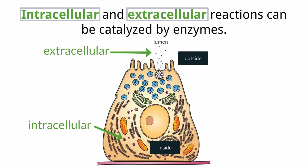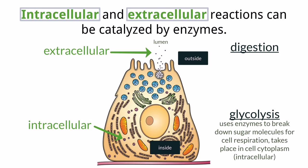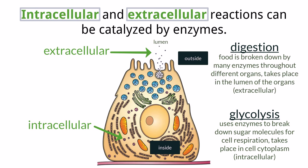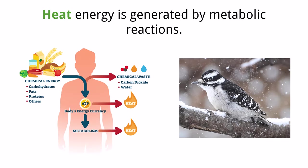Two examples you need to know as a difference between intracellular and extracellular enzymes are enzymes found within the processes of glycolysis and digestion. Glycolysis is a process that happens in the cytoplasm and uses a few enzymes to produce pyruvate molecules used in cell respiration. In digestion, food is taken in by the mouth and moved to the stomach and then to the intestines. Each of these places has an external location called the lumen where the food sits, and the adjacent cells release enzymes into the lumen to break down food into smaller pieces that can be absorbed. For these reasons, glycolysis uses intracellular enzymes and digestion uses extracellular enzymes.